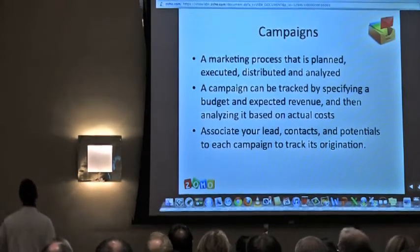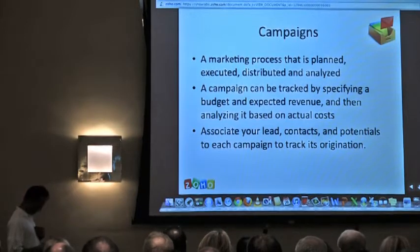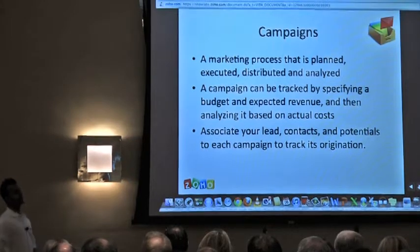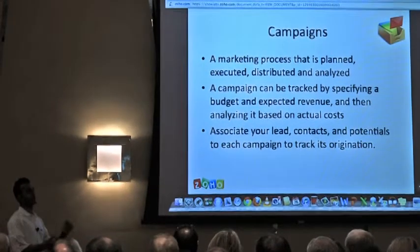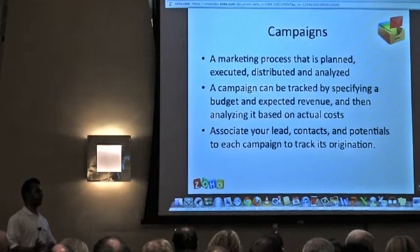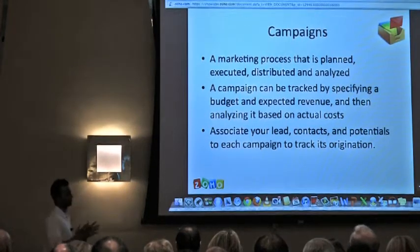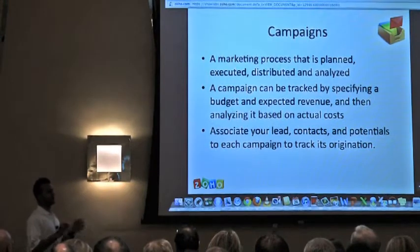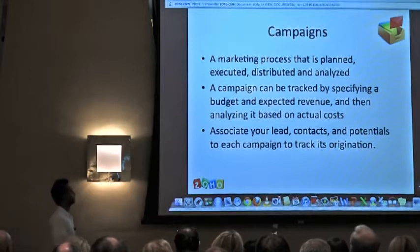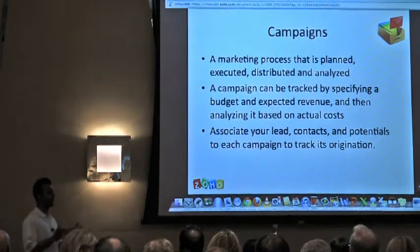Let's start with campaigns. Inside Zoho, a campaign is a marketing process that's been planned, executed, distributed, and analyzed. This is like a television commercial, a radio ad, a newsletter — something you want to keep track of in the system. You want to allocate a budget towards it, how many leads you think you're going to obtain, how much you expect to make, how much you actually made, and then run a report against that. It's not referring to mass emailing at all — this is specifically about your advertisement.